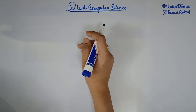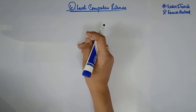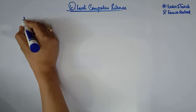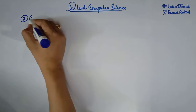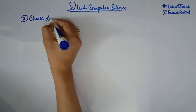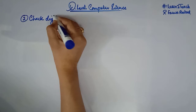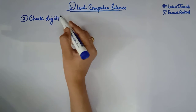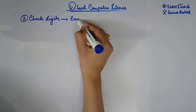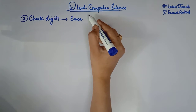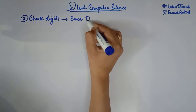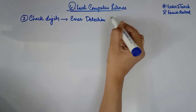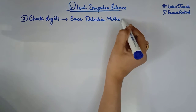Hello everyone, this is Farah Batool and welcome to the course of O-Level Computer Science. Today in this video we are going to see another method of error detection, and that is the check digit. We have already covered parity checks in the previous video. The check digit is an error detection method used to verify that the data that has been entered or transmitted is correct.